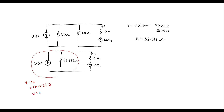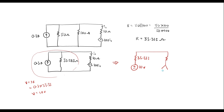Therefore V equals 10 volts. I can replace this circuit with a 10 volt voltage source in series with 33.333 ohm. So we have a resistor and a voltage source of magnitude 10 volts — this is 33.333 ohm. And here we have a resistor and the dependent source 100·I1, with 10 ohm and current I1.